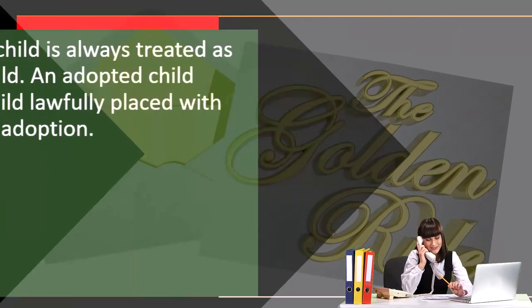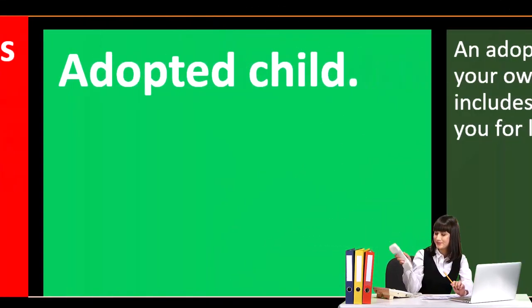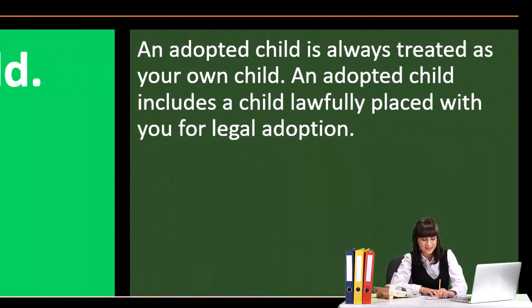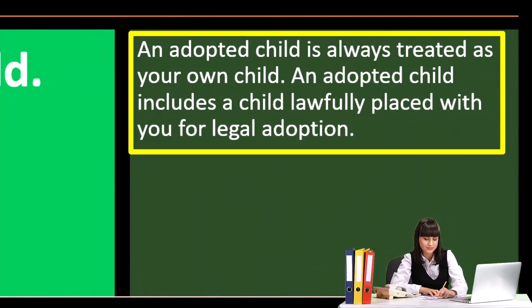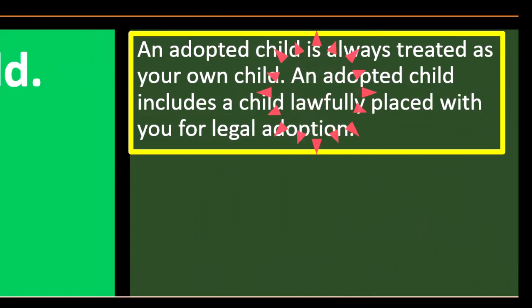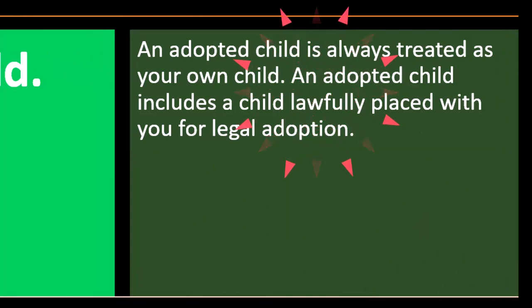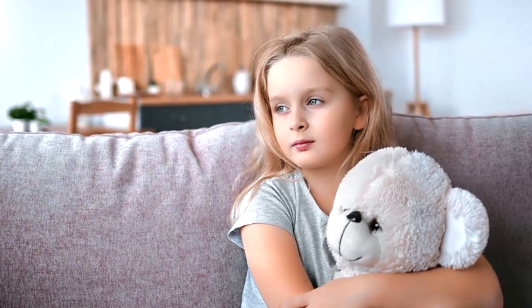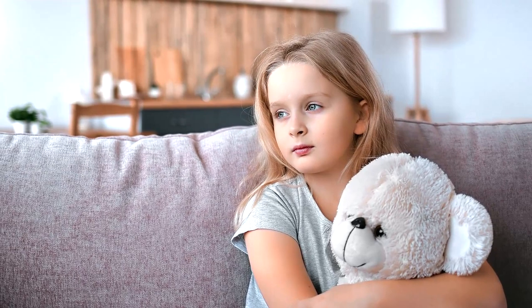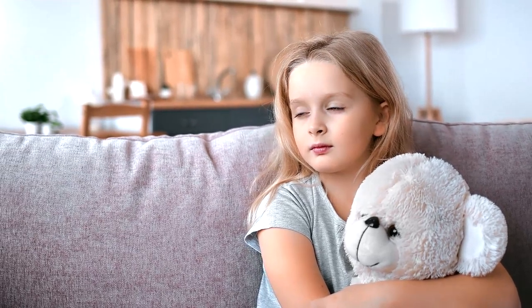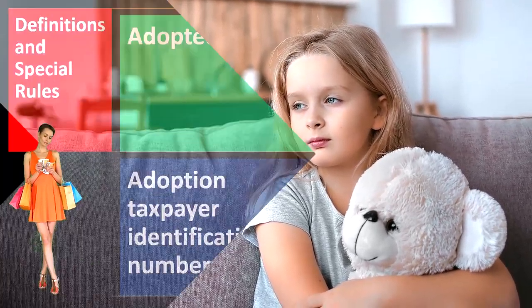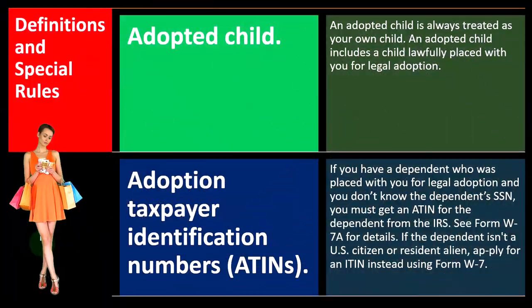Definitions and rules. We've got the adopted child. An adopted child is always treated as your own child. An adopted child includes a child lawfully placed with you for legal adoption. So anytime that comes up, it's a pretty straightforward rule — you adopted them, and they're basically your child with regards to the taxes related to them.